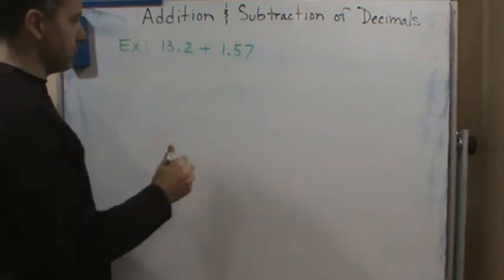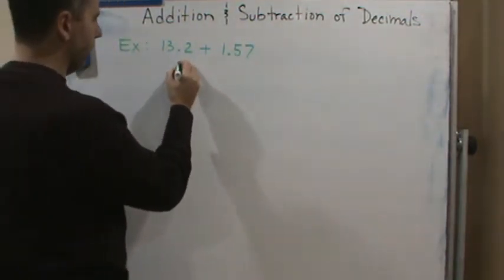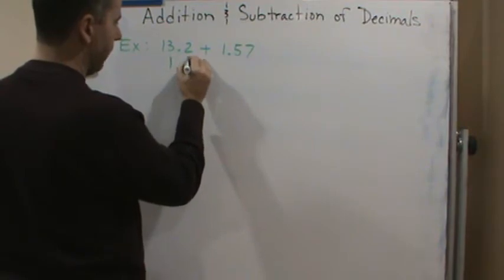The first thing I'm going to do is line up the decimal point. I'm going to line up the decimal point here. So it's going to be 1.57.